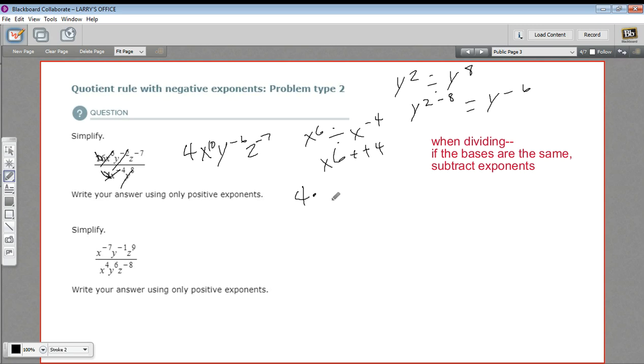We have a 4 multiplied by an x to the 10th. This y to the negative 6th, I can write as 1 over y to the positive 6th. And this z to the negative 7th, I can write as 1 over z to the positive 7th. What that does, we can think of this 4 as 4 over 1 and this x to the 10th as x to the 10th over 1. It puts these on the bottom of the fraction. When we do all this multiplication here, we're going to end up with 4x to the 10th on the top and y to the 6th, z to the 7th on the bottom. And that is going to be our final answer.